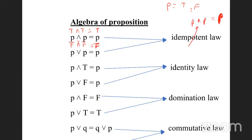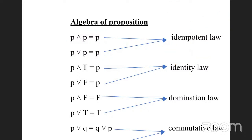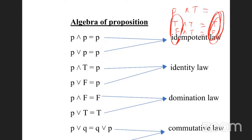So p and p will always give you p. Once you know the truth table for conjunction you don't have to learn these. What about p or p? True or true gives true, false or false gives false — so p or p is p. What about p and true? When p is true the answer is true, when p is false the answer is false, so p and true is always p.